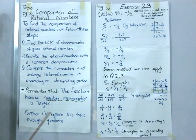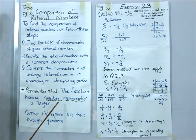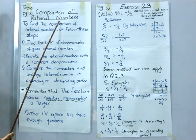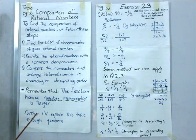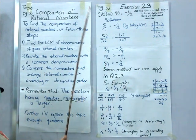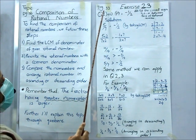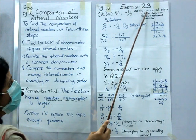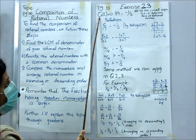Through this concept, we will define which rational number is greater and which one is smaller. I will explain this topic through questions. Now, open page number 33, Exercise 2.3, Question number 1.